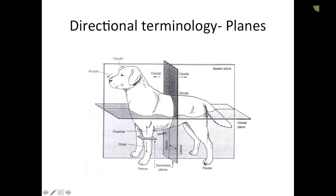Plantar refers to the aspect of the foot touching the ground, specifically on the back legs. Palmar is the aspect of the foot touching the ground on the front legs. A good way to remember: palmar refers to front legs — think of the palms of our hands, which are on our arms, equivalent to the dog's front legs. Plantar refers to back legs — I think of stomping on plants with my feet.